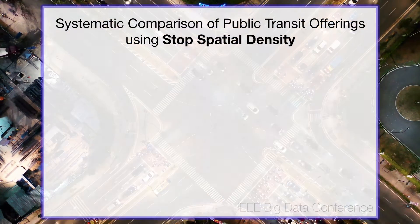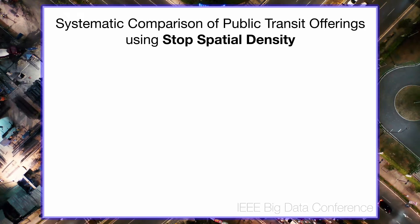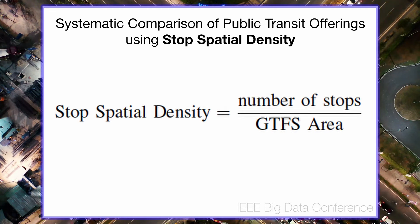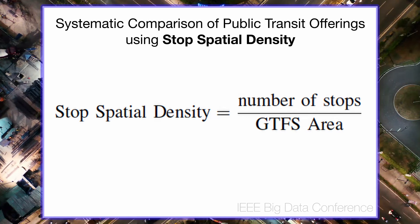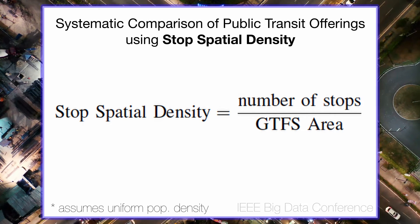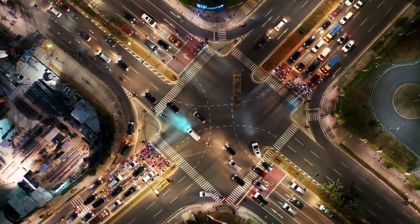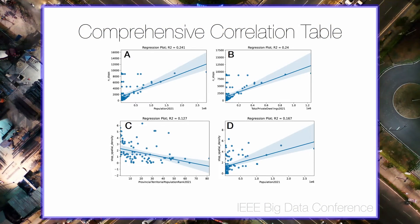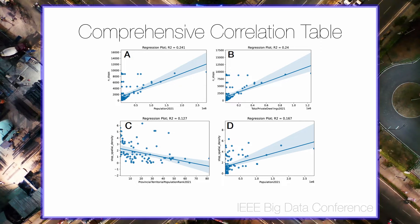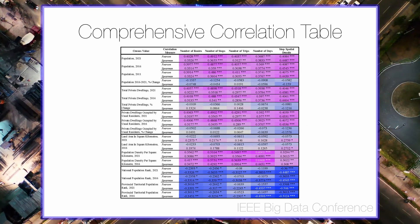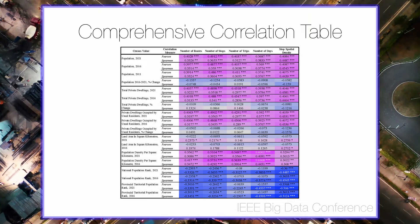To systematically compare public transit offerings between regions, generalized assumptions were incorporated into the metric calculations. For example, stop spatial density was computed analogously to a simple weighted average, which assumes a uniform distribution of population over a serviced land area — that is, the number of stops over that area. While relatively simple to implement, the resulting metric tends to be somewhat inaccurate for sparse rural or non-uniformly populated areas. We then generated correlations between census population metrics and the static GTFS metrics, incorporating census population data for years 2011, 2016, and 2021, and produced a comprehensive correlation table comprising both Pearson and Spearman correlations.